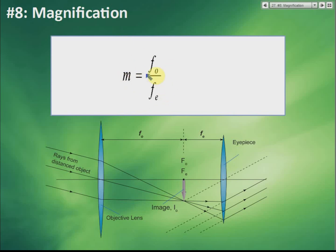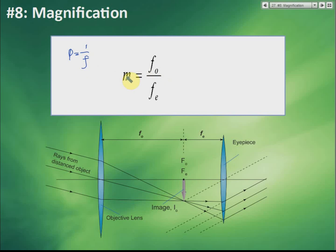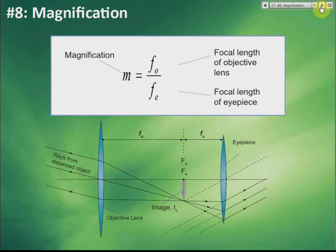For magnification of the telescope, the formula is: magnification = fo / fe. This also explains why the objective lens must have low power — since P = 1/f, lower power means larger focal length fo, which gives greater magnification and a bigger image. You need to memorize this formula to calculate telescope magnification.